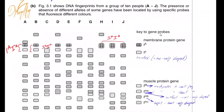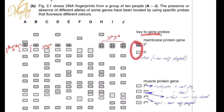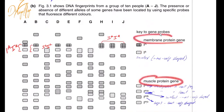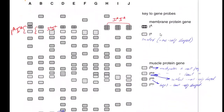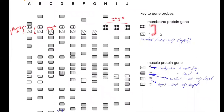Figure 3.1 shows the DNA fingerprints from a group of 10 people, A through J. The presence of different alleles of some genes have been located using specific probes that fluoresce different colors. The key to gene probes shows the symbols for the membrane protein gene and the muscle protein gene — two genes being analyzed here.